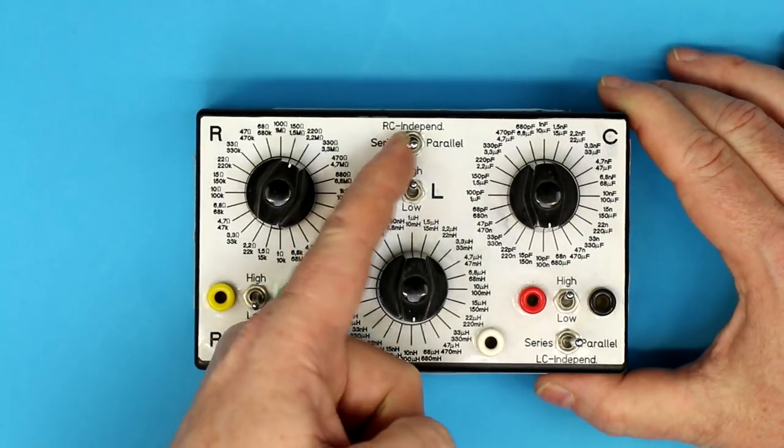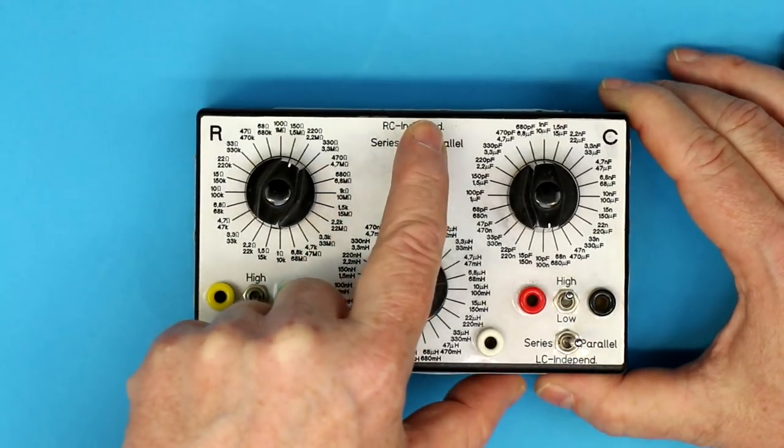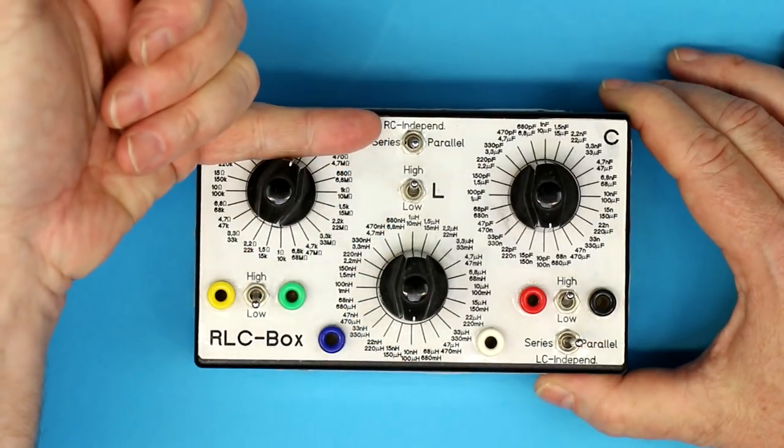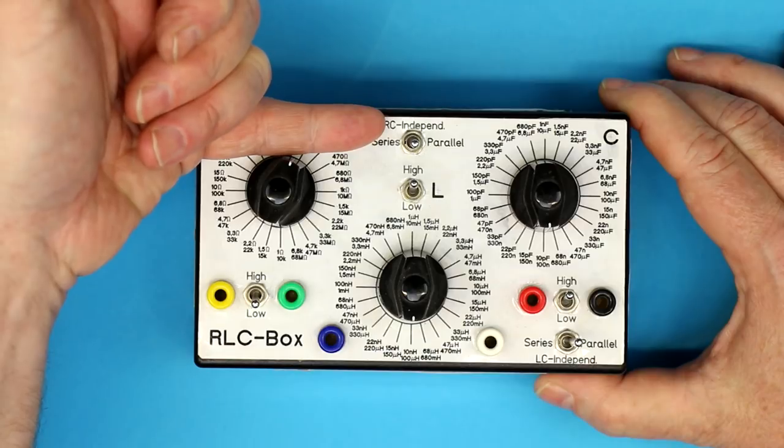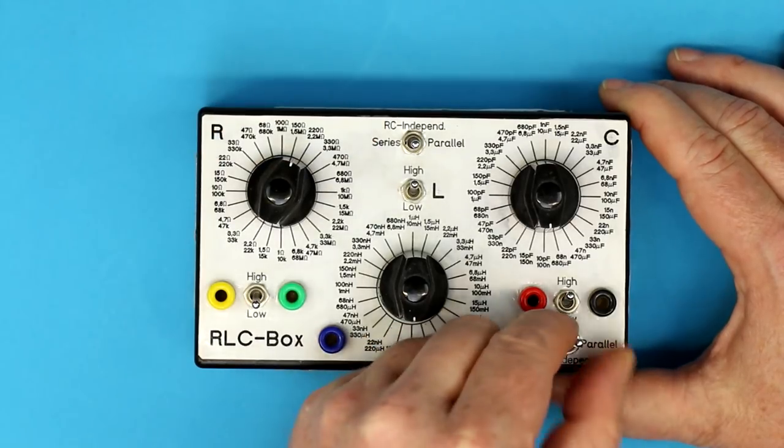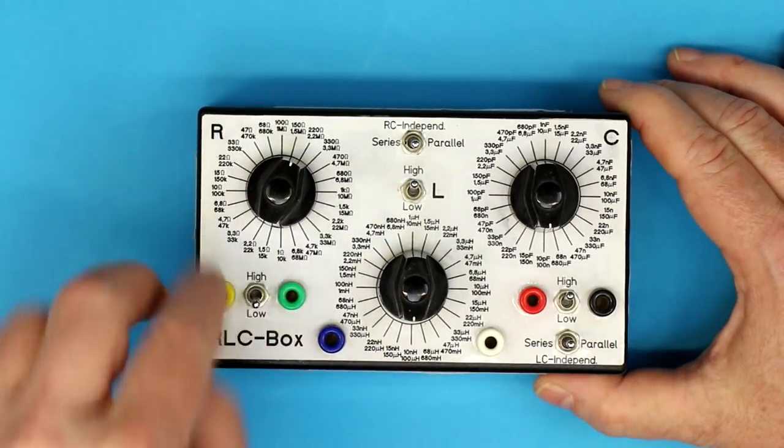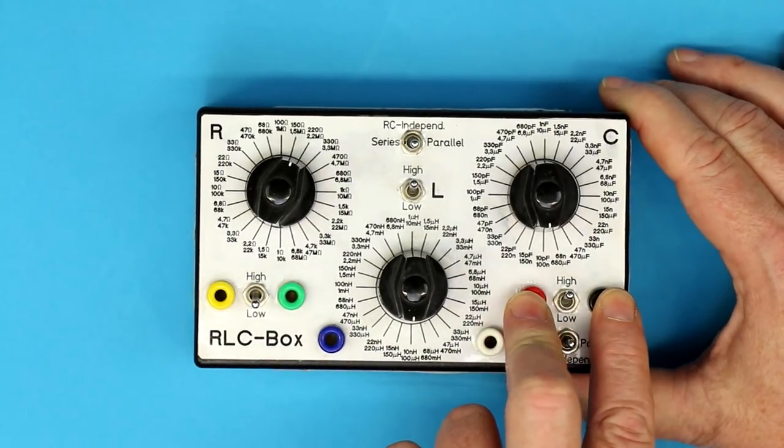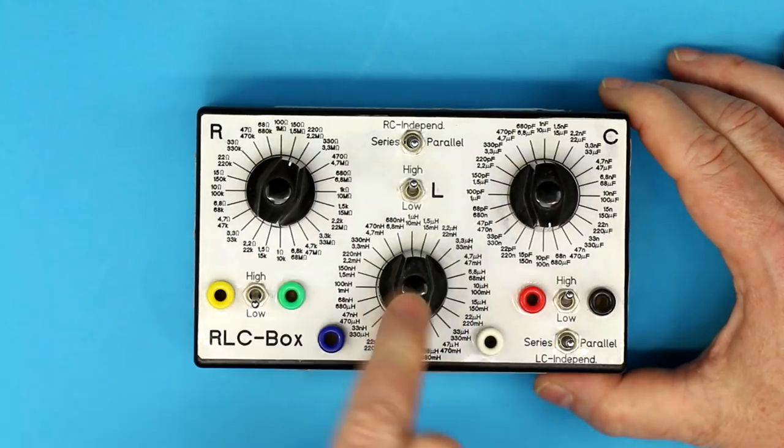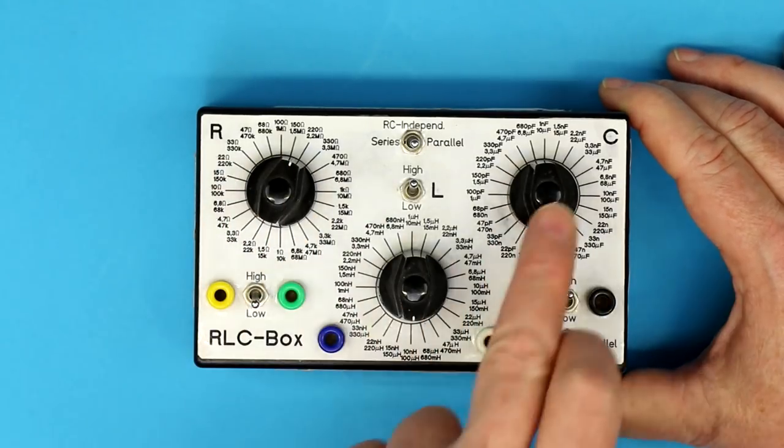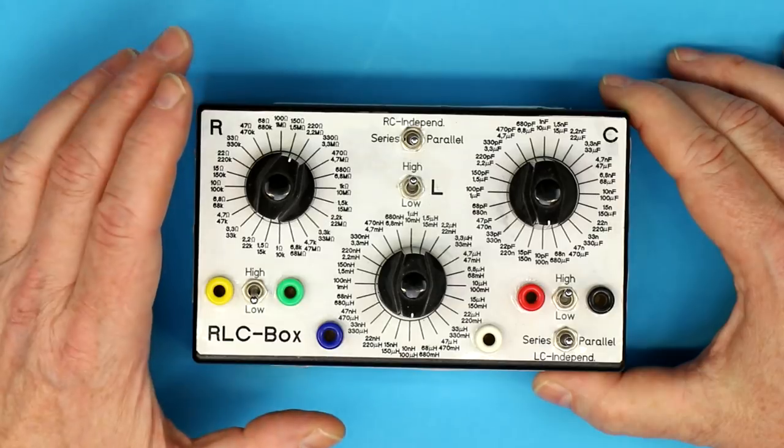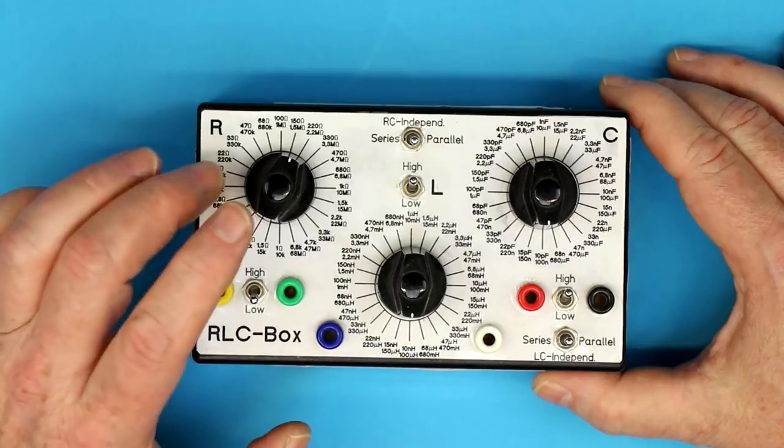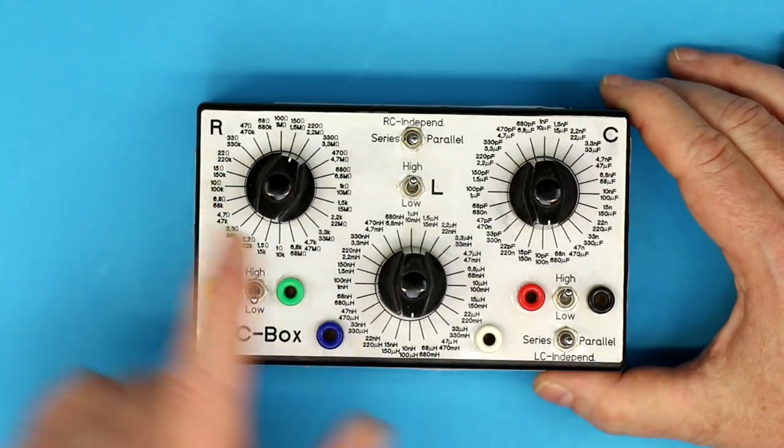If you switch these triple throw switches to what is still here called independent, and in fact it means isolated positions, then you can tap off the resistance, the inductance and the capacitance without any connections between the three component switches. Of course I chose the best quality or the best compromise of quality for the resistors, inductors and capacitors.